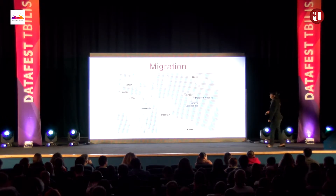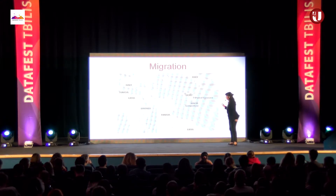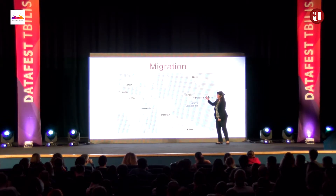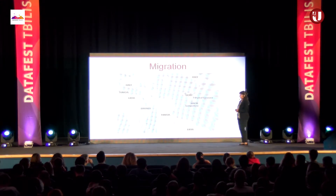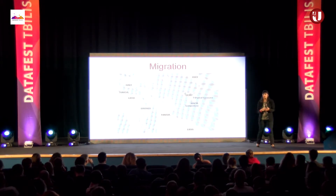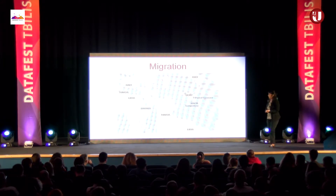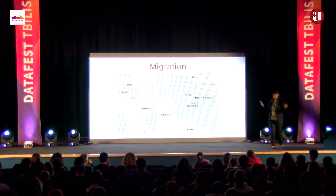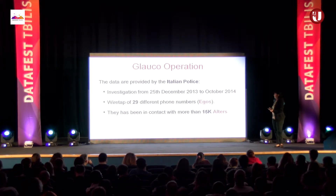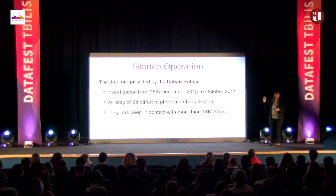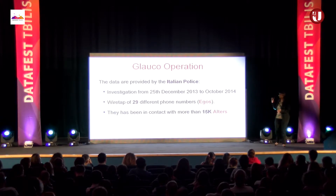Most of the people were trying to escape from Libya — many coming from different parts of Africa, going to Libya, and then trying to reach Europe. Many go to the closest island, Lampedusa, in the Mediterranean Sea. The Italian police take them and bring them to Sicily. The data come directly from the Italian police, from an investigation running from Christmas Day 2013 to October 2014.